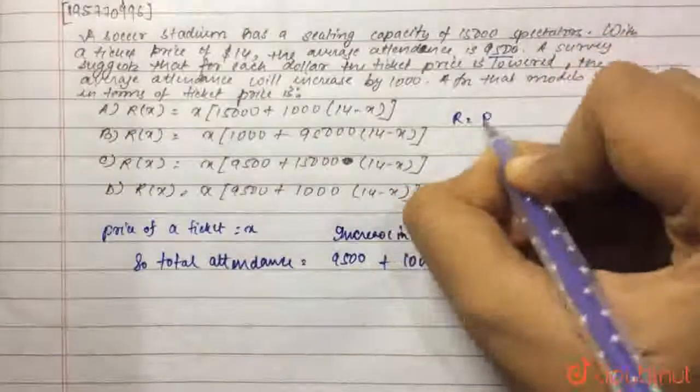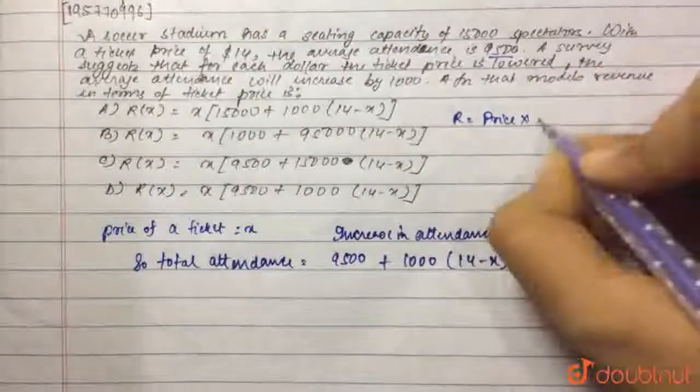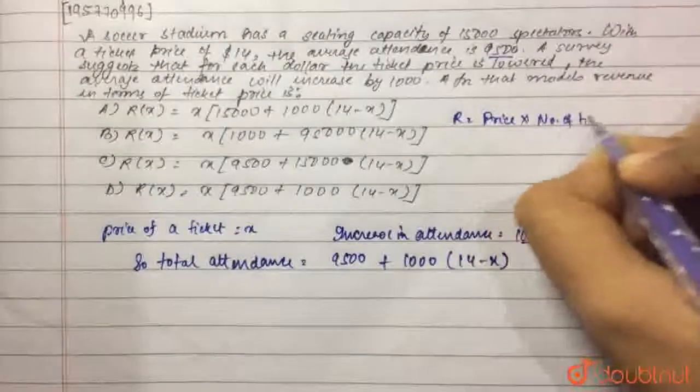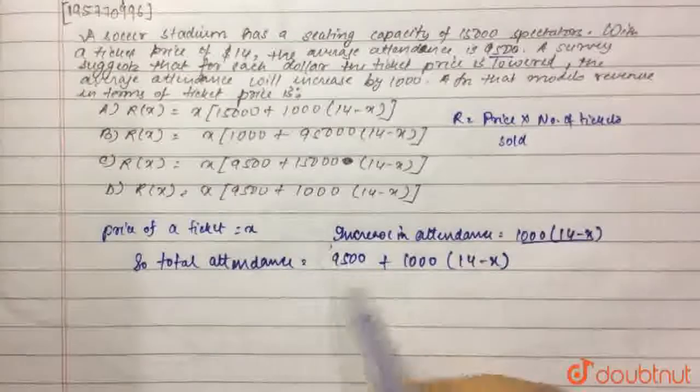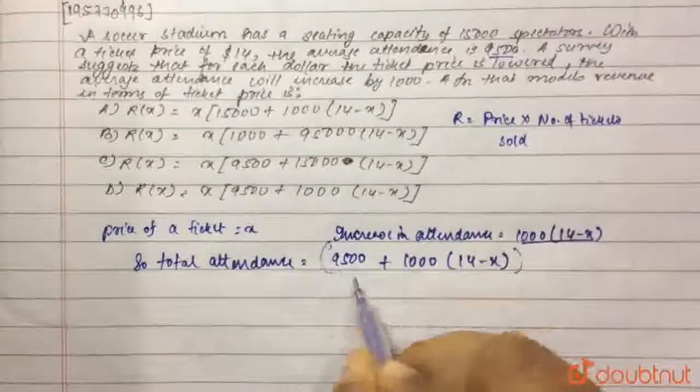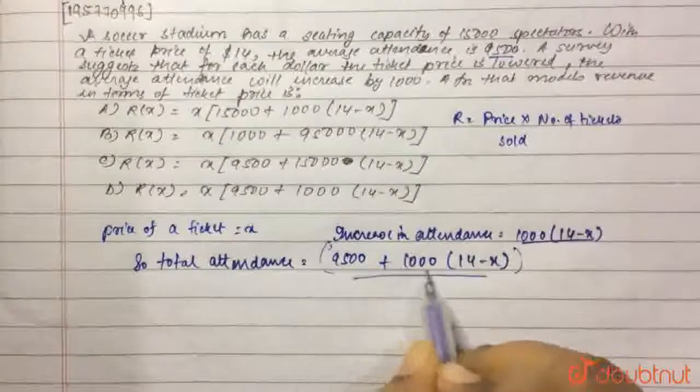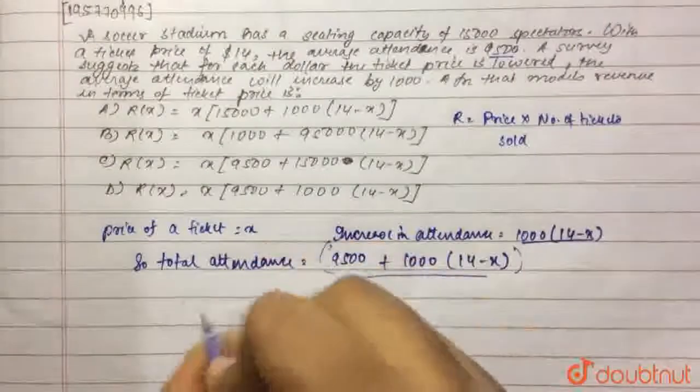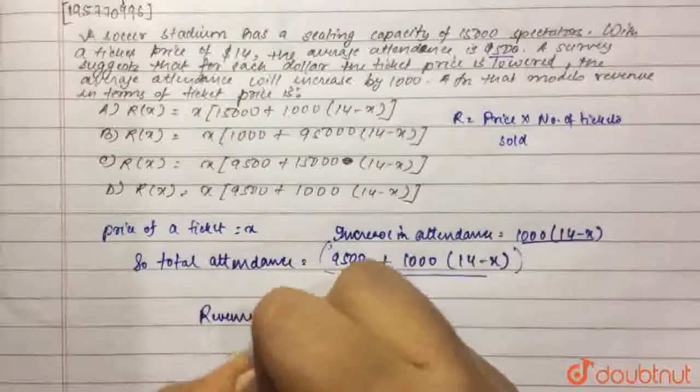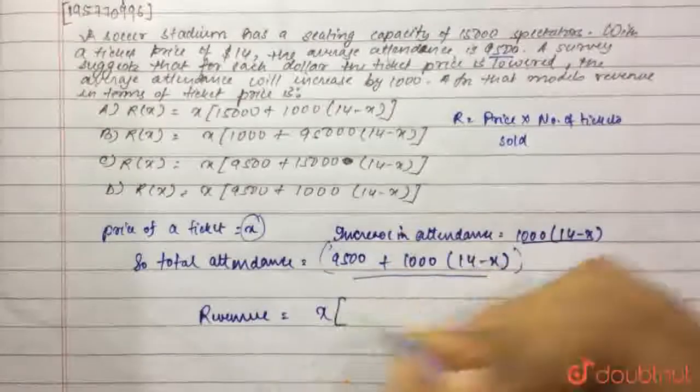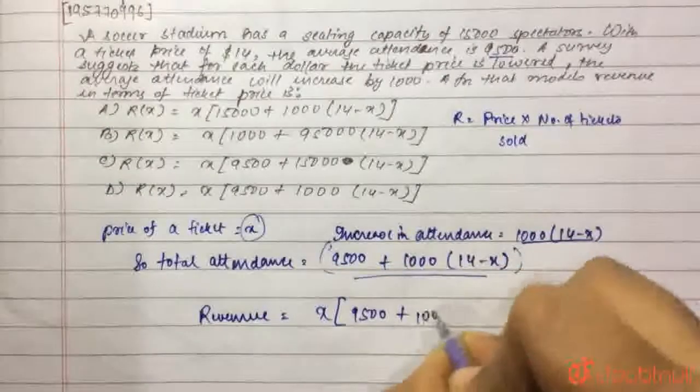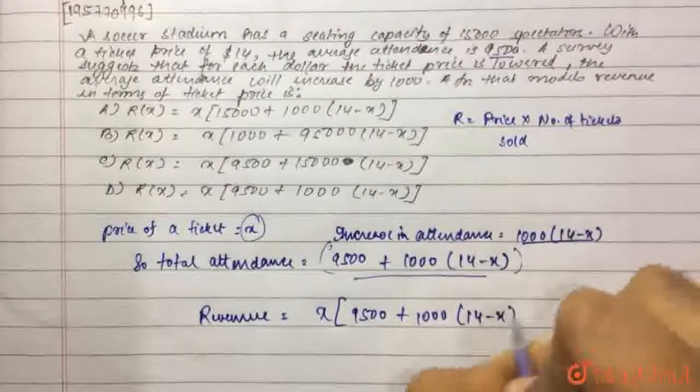Revenue equals price into number of tickets sold. So the number of tickets sold will be 9,500 plus 1,000 into 14 minus X. So revenue will be, what was the price of a ticket? It was X, so X into 9,500 plus 1,000 into 14 minus X.